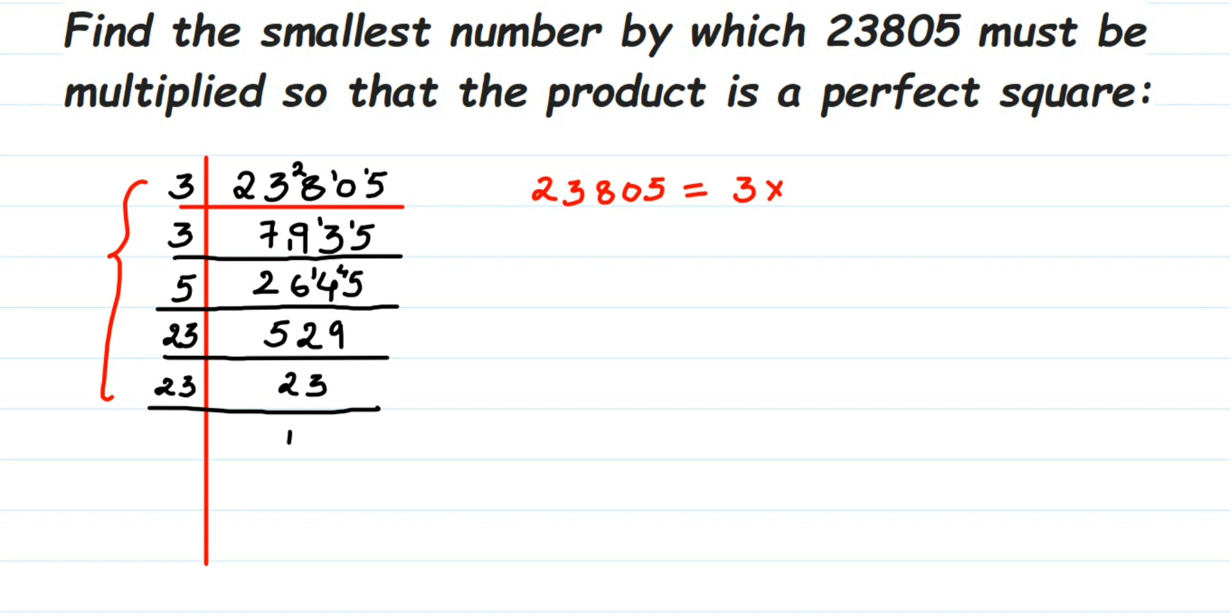Now we got 23. 23 divided by 23 is 1. I'm going to rewrite all the factors we got here. So 23,805 = 3 × 3 × 5 × 23 × 23.